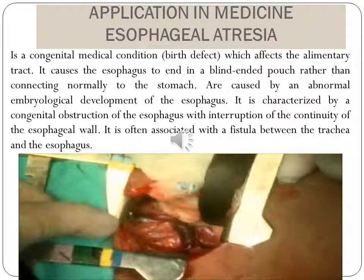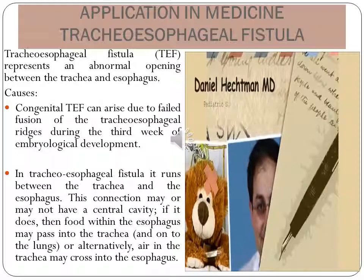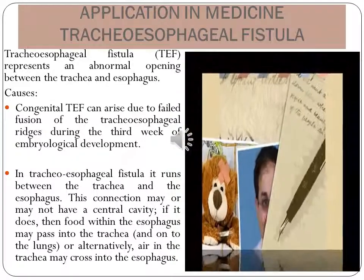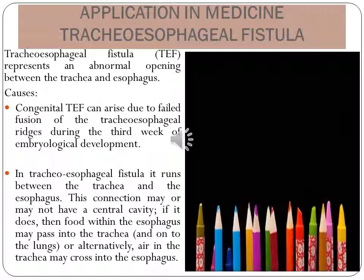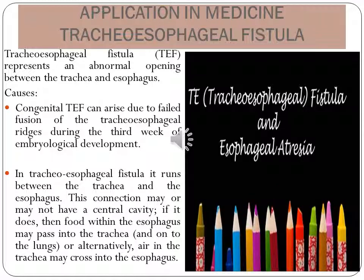Esophageal atresia is characterized by a congenital obstruction of the esophagus with interruption or discontinuity of the esophageal wall. It is often associated with a fistula between the trachea and the esophagus. Sometimes a study reveals a connection between the breathing tube and the feeding area, called the TE fistula.